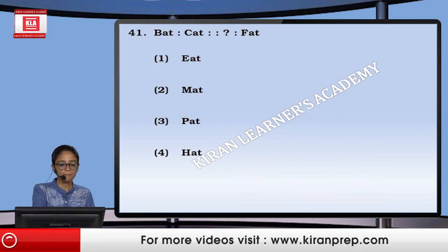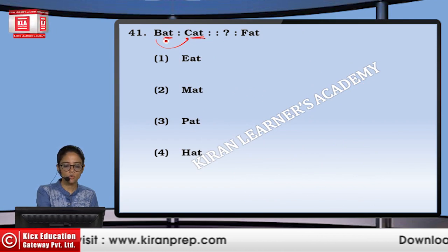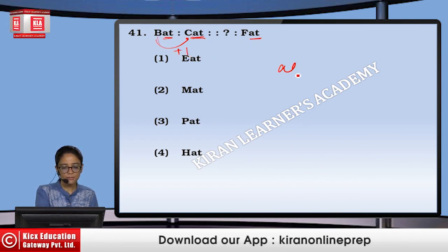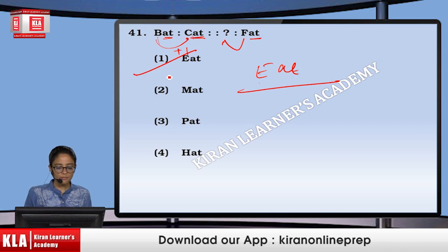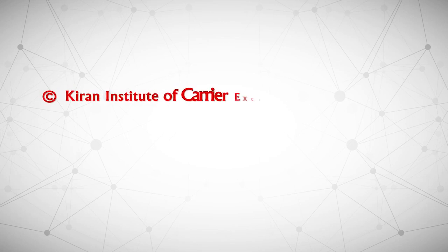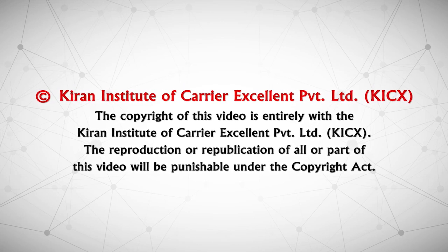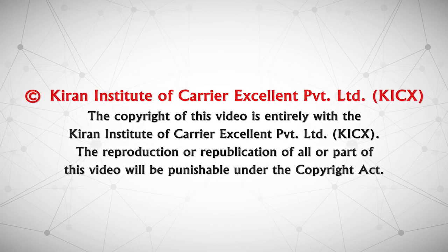Next, bat is to cat — the last two letters are the same, only the first letter increases by 1. Similarly, the last two letters will remain the same and the other one will be E. That means option number 1. So these were some questions on analogy and similarity. Thank you.